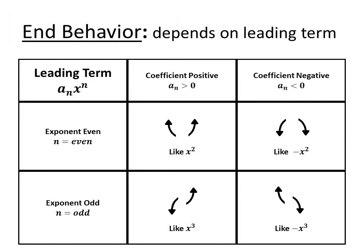The leading term can tell us a lot about the overall shape of the function. First, look at the degree of the leading term. If the exponent is even, the shape is going to be like x squared — it either opens up on both sides if the leading coefficient is positive, or opens down on both sides if negative. If the exponent is odd, it's going to look like x cubed — starting low and ending high if positive, or starting high and ending low if negative.